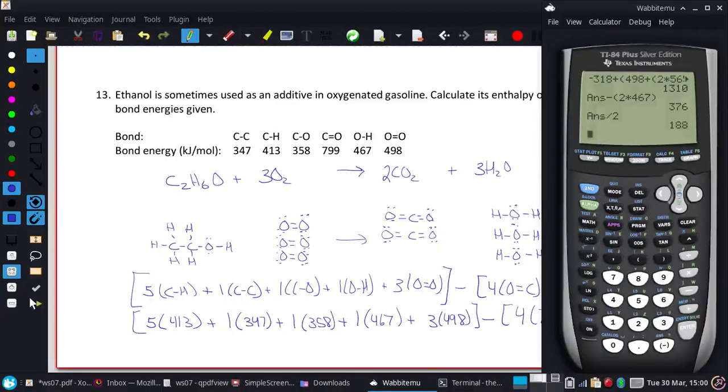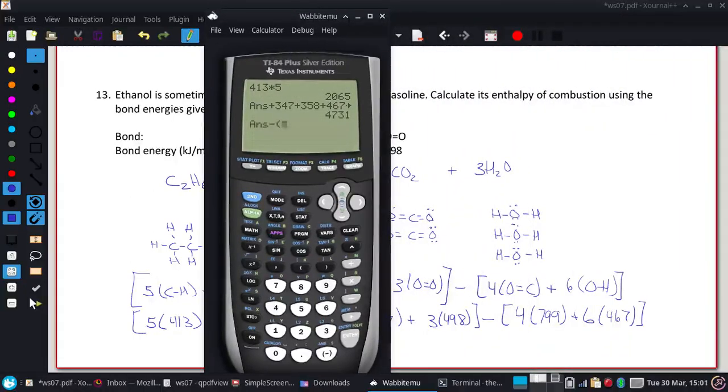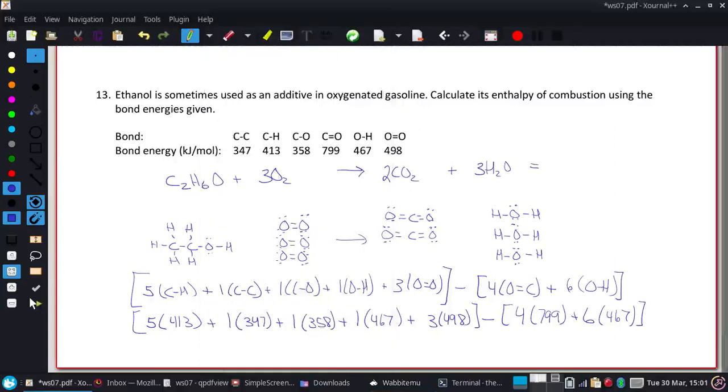Okay, so all my bonds broke here. I have 413 times 5, plus 347, plus 358, plus 467, plus 3 times 498. That would be all of my bonds broken. And then, all the ones formed, minus 4 times 799, and 6 times 467. And I get that that enthalpy should be negative 1267 kilojoules.